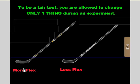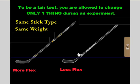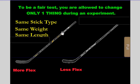Now you start testing more flex versus less flex. That's the only thing that you're going to be testing. Everything else stays the same. You're going to use the exact same stick type — they're both Bauer sticks. They're both going to have the same weight, because otherwise if one of them shoots the puck harder, you might say, well, maybe it wasn't the flex, maybe it was because it was heavier or lighter. So you want to make sure they're the same weight and the same length. Because if one stick shoots the puck harder, you don't want to wonder if maybe it was longer. Make sure they're the same length — that way it's going to be fair.